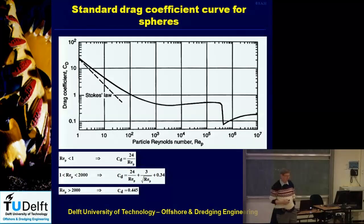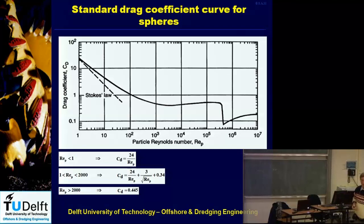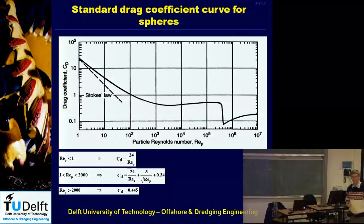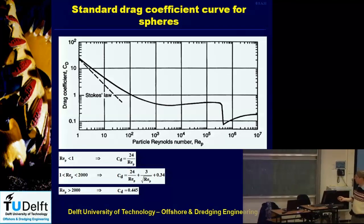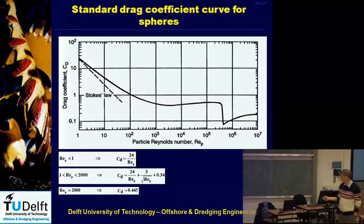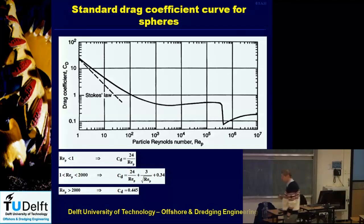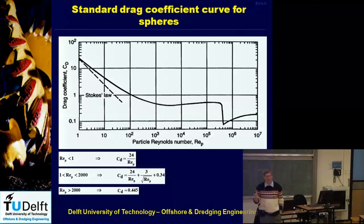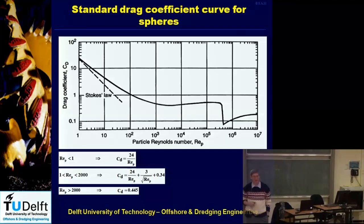To calculate settling velocity, you need the Cd value of particles. This graph is for spheres, with the particle Reynolds number — settling velocity times diameter divided by viscosity — on the horizontal axis. There is already a problem here: the settling velocity appears in the Reynolds number, but you need the Reynolds number to determine the settling velocity, so it's an implicit situation.